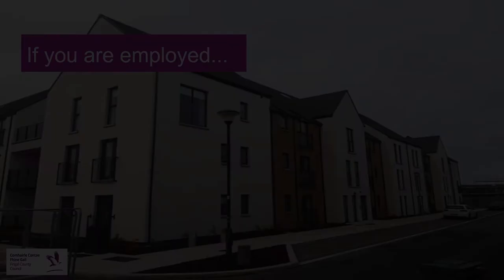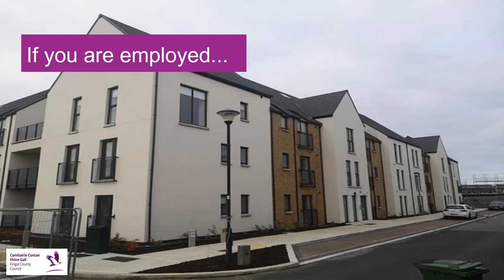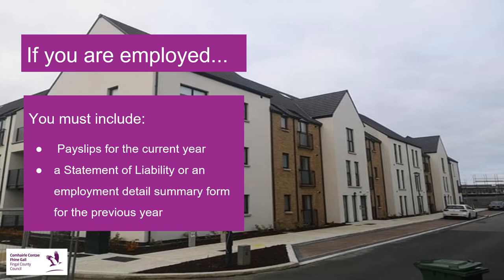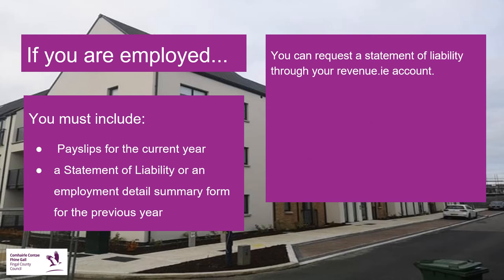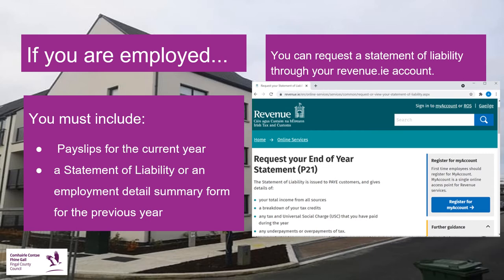If you are employed, you will need to include payslips for the current year and/or a statement of liability or employment detail summary form from the previous year. A statement of liability is issued to PAYE customers and gives details of your total income from all sources, a breakdown of your tax credits, any tax and universal social charge paid during the year, as well as any underpayments or overpayments of tax. This can be requested through your revenue.ie account.